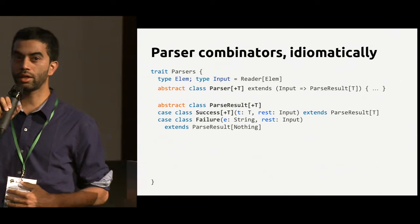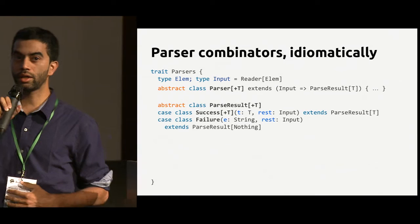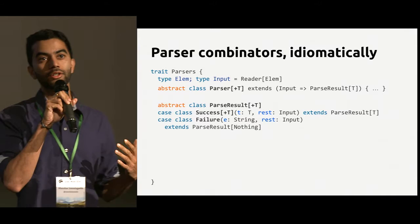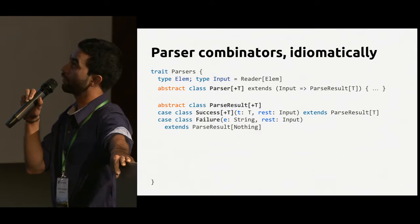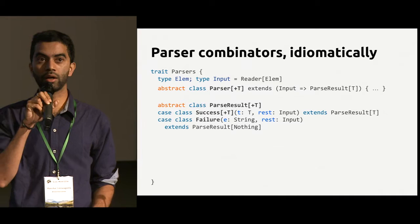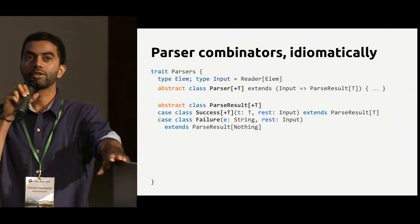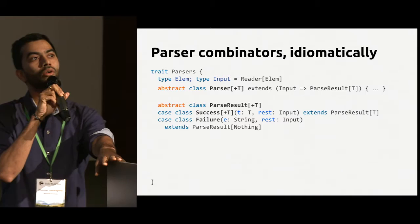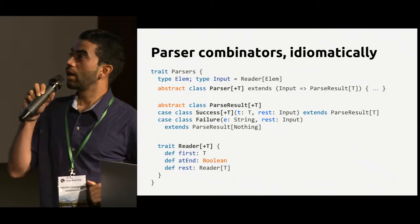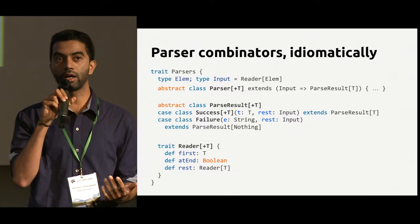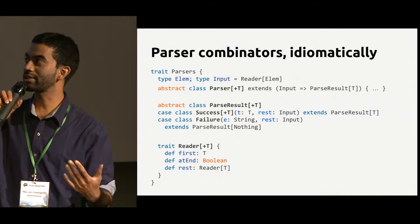A parse result has two options: either it's a success or a failure. If you succeed, you return the element itself and there may be some remaining input; if you fail, you exit with an error message. The input is a reader of elements, which can be generic. In our previous example we looked at a char reader, so element would be char. The reader interface gives you: get me the first element, let me know if I'm at the end, and give me the rest of the input.